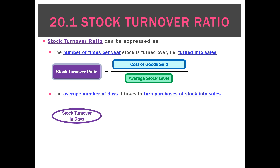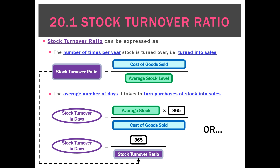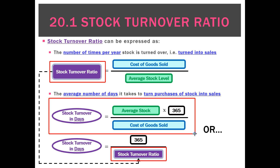The alternative is the average number of days it actually takes to turn purchases of stock into sales. We do that by taking the average stock, multiplying it by 365 (the number of days in a year), and then dividing by cost of goods sold. Alternatively, once we've figured out the number of times per year ratio, we can calculate stock turnover in days by simply doing 365 divided by the stock turnover ratio — giving us the same figure.